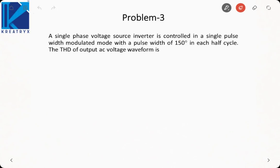In next problem it is saying a single phase voltage source inverter is controlled in a single pulse width modulated mode with a pulse width of 150 degrees in each half cycle. So 2D has been given to me as 150 degrees. So D becomes 75 degrees. We need to find the THD. So first we will need to find the distortion factor.